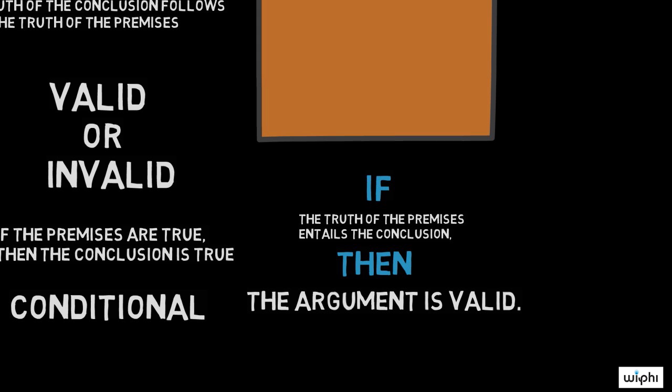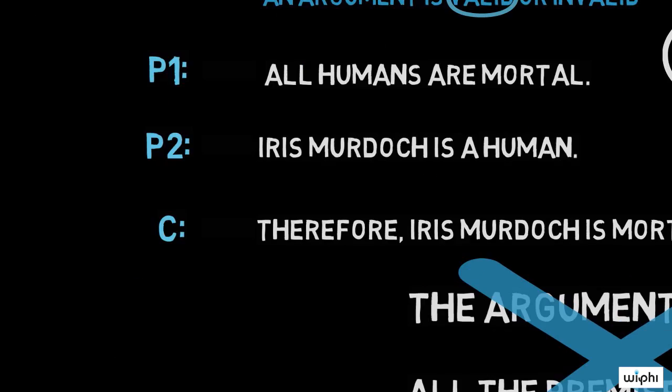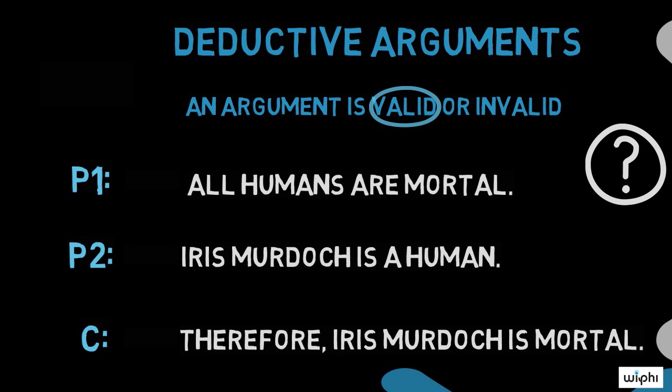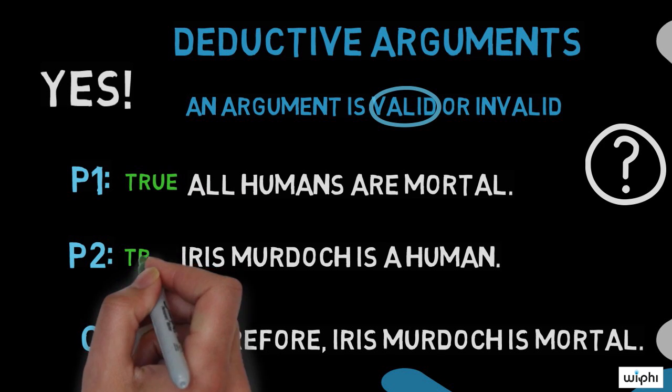Now this all sounds very abstract, so let's return to some examples. Let's look at our previous example. I have said that the argument about the British philosopher Iris Murdoch is valid. Am I right? Yes. If the premises of the argument are true, then the conclusion must be true in this case.